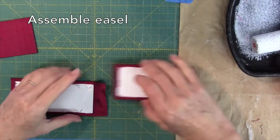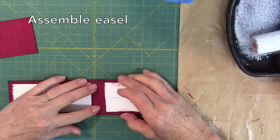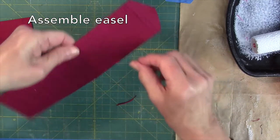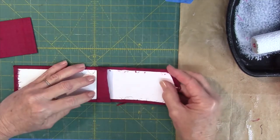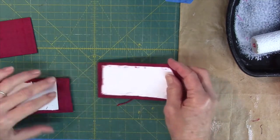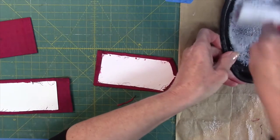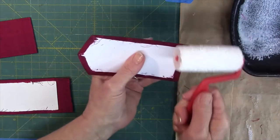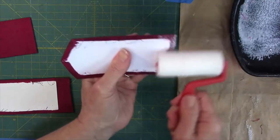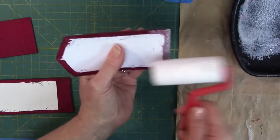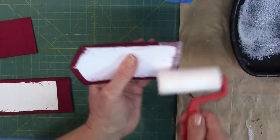So this piece is going to go onto this piece like that, and we want a slight gap. So I'm going to put the glue on here, go a little beyond, clean that edge up a little bit.